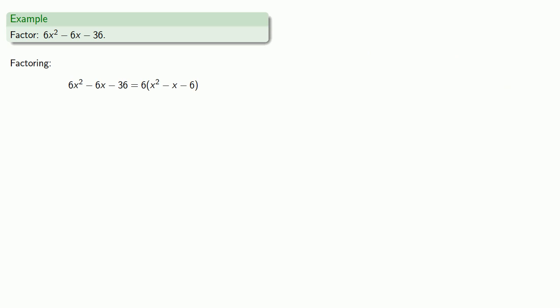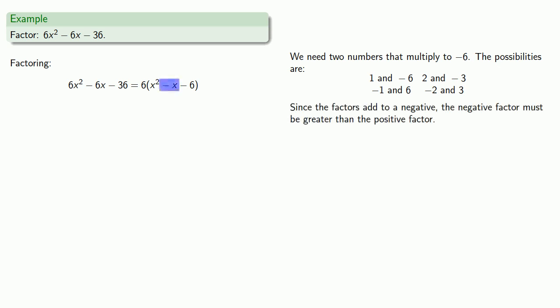So now we can try and factor. We need two numbers that multiply to minus 6. Since the factors will add to give us a negative x, we know that the negative factor must be greater than the positive factor. So we'll start by testing 1 and negative 6. Nope. How about 2 and negative 3? And that produces our factorization.